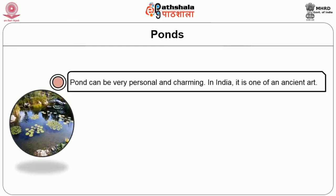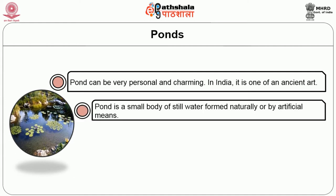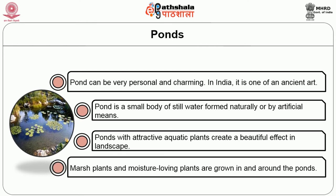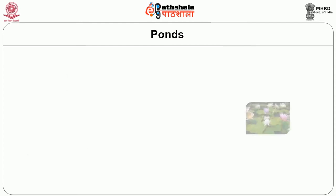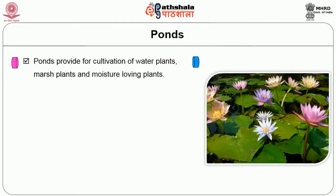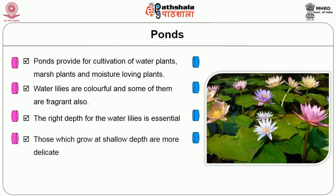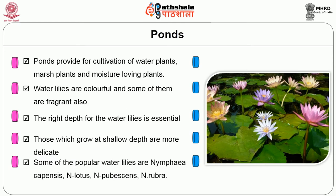Then ponds. Ponds can be very personal and charming. In India, it is one of the ancient arts. A pond is a small body of still water formed naturally or by artificial means. Ponds with attractive aquatic plants create a beautiful effect in landscape. Marsh plants and moisture-loving plants are grown in and around ponds. Ponds provide for cultivation of water plants, marsh plants and moisture-loving plants. Water lilies are colourful and some of them are fragrant. The right depth for water lilies is essential; those which grow at shallow depth are more delicate. Some popular water lilies are Nymphaea cerulea, Nymphaea lotus, Nymphaea pubens and Nymphaea rubra.